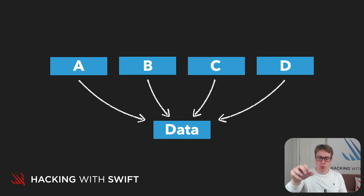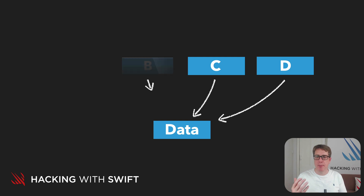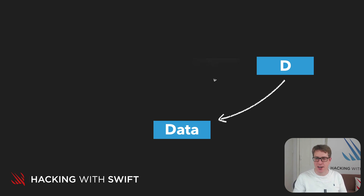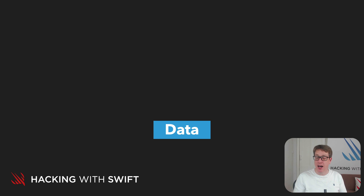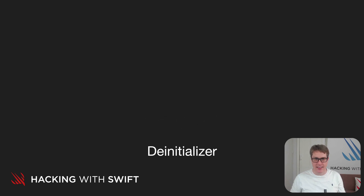Also, because one instance of a class — the data at the bottom — can be referenced in various places, it becomes important to know when the final copy is destroyed. If A goes away, and B goes away, and C goes away, and D goes away, there's nothing pointing to our data anymore. That's where the deinitializer comes in — it allows us to clean up any resources we allocated when that final copy is destroyed and is no longer needed.